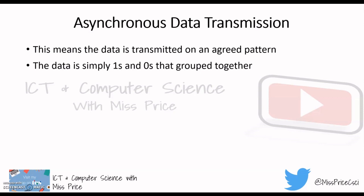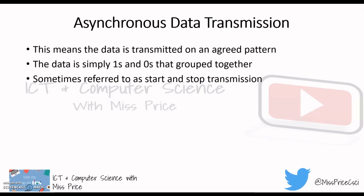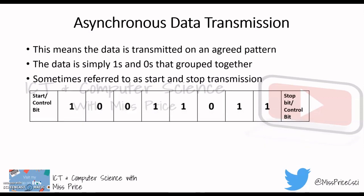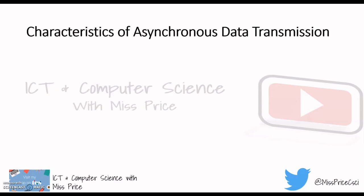Because the data is grouped and sent, there has to be a start point and then a stop point. That's why asynchronous data transmission is sometimes referred to as start-and-stop transmission. Here's an example: we have a control bit — the first bit — and then we have the end bit. So when this data is transmitted and grouped together, there's a start point and there's a stop point.